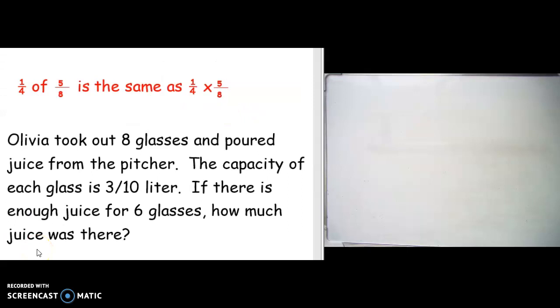Olivia took out eight glasses and poured juice from the pitcher. The capacity of each glass is three-tenths liter. If there is enough juice for six glasses, how much juice was there?